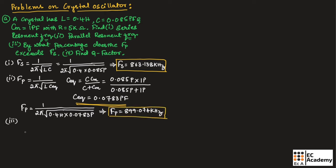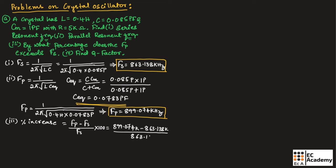Next, we need to find the percentage increase in parallel resonant frequency with respect to series resonant frequency. The formula is: percentage increase = (Fp − Fs) / Fs × 100. So it will be (899.074 kHz − 863.138 kHz) / 863.138 kHz × 100, giving a percentage increase of 4.163 percent.